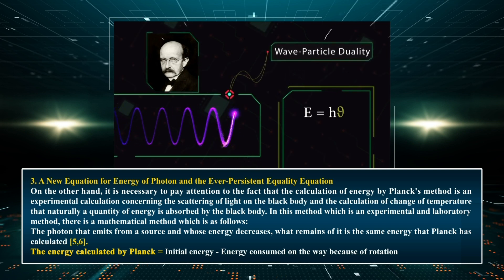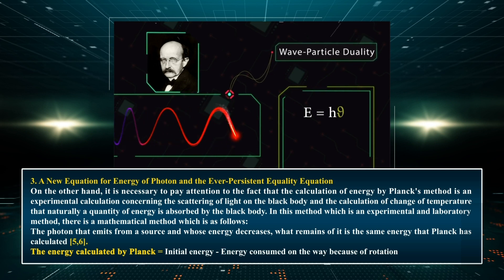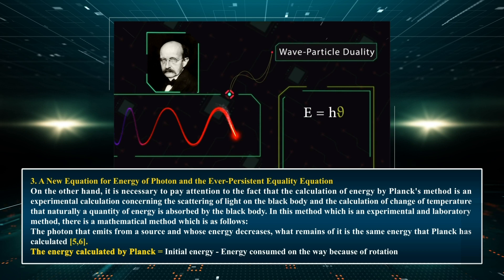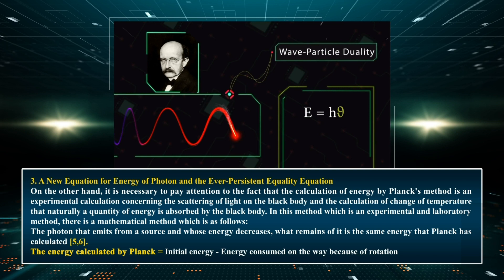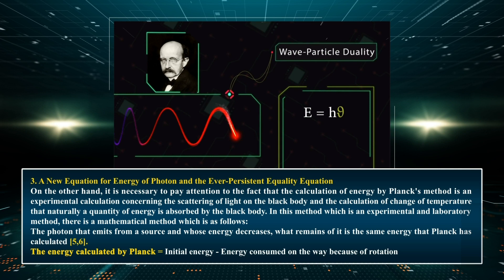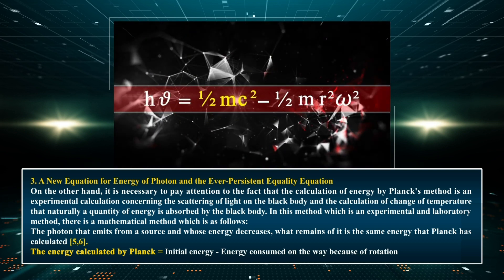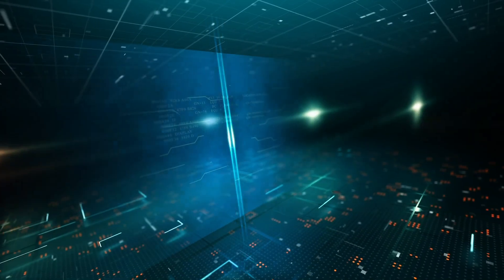A new equation for energy of the photon and the ever-persistent equality equation. It is necessary to pay attention to the fact that the calculation of energy by Planck's method is an experimental calculation concerning the scattering of light on the black body, and the calculation of change of temperature — naturally a quantity of energy is absorbed by the black body. In this experimental and laboratory method, the photon that emits from a source and whose energy decreases — what remains of it is the same energy that Planck has calculated. The energy calculated by Planck equals initial energy minus energy consumed on the way because of rotation.